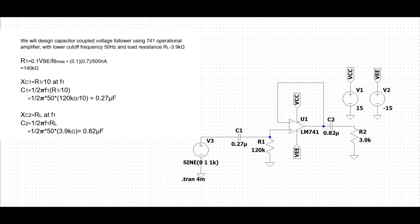We can calculate C1, which equals R1 divided by 10 at frequency F1. Based on the calculation, C1 is equal to 0.27 microfarad. Similarly, C2 equals 1 divided by 2π times F1 times RL, giving a capacitor value of 0.82 microfarad.